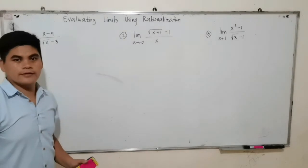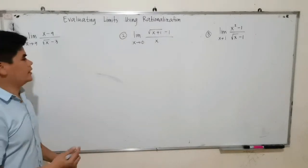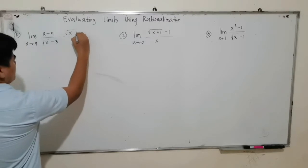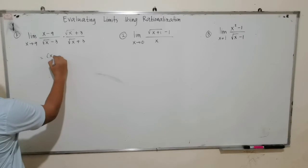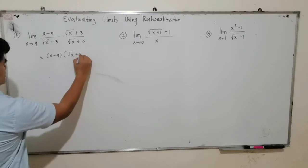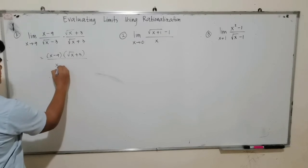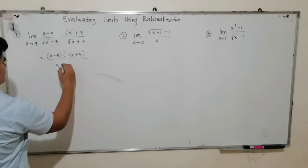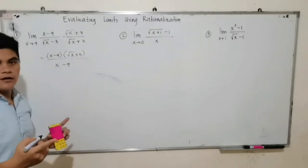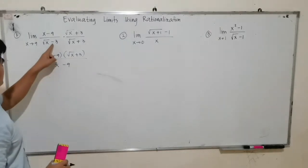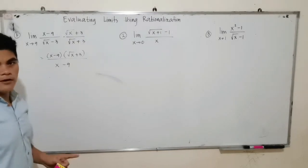When we say conjugate: if the denominator is square root of x minus 3, its conjugate is square root of x plus 3. So we are going to multiply the function by square root of x plus 3 over square root of x plus 3. The principle here is the product of a binomial — a plus b times a minus b equals a squared minus b squared.